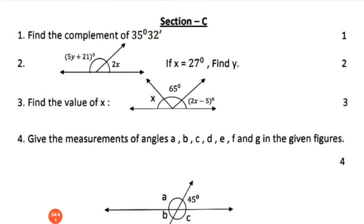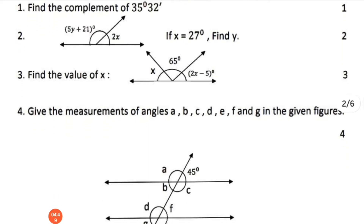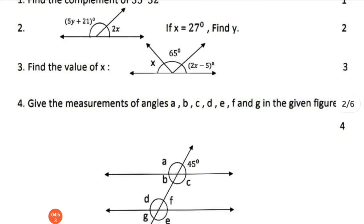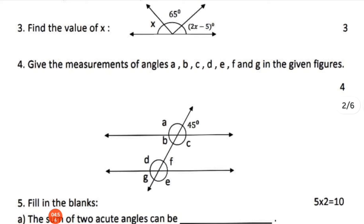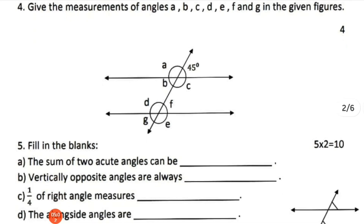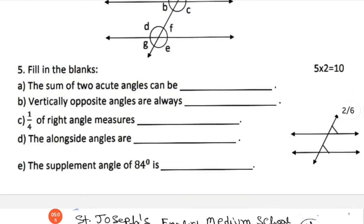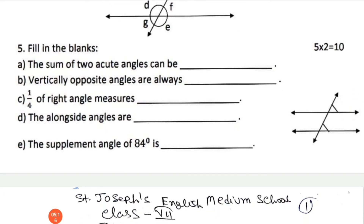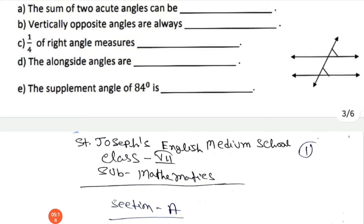Section C: find the complement of 35 degrees 32 minutes. The next question: given the figure, jx equals 20, find y; find the value of x. Given the measure of angles A, B, C, D, E, F, and G in the given figure. Fill in the blanks: the sum of two angles; vertically opposite angles are always equal; one-fourth of a right angle measures; the supplement of 84 degrees is.